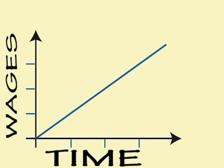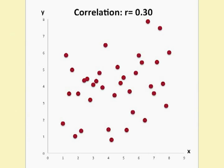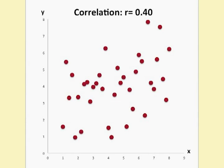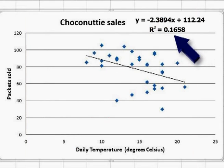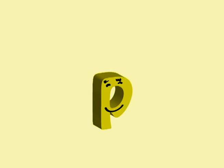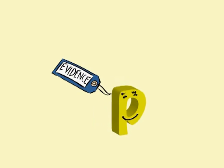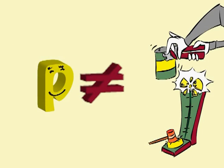The slope tells us the change in y relative to the change in x. The correlation coefficient tells us how close the points are to the fitted line. The r-squared value tells us how much of the variation in y is explained by x. As with all statistical tests, the p-value tells us how much evidence we have to reject the null hypothesis — the smaller the p-value, the more evidence we have. It is not an indication of strength or usefulness.